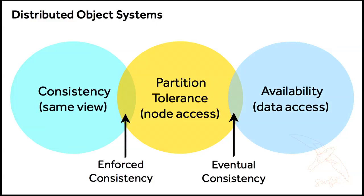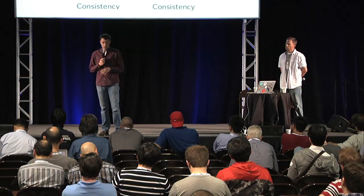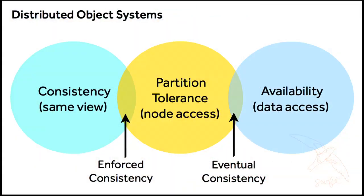Partition tolerance means you can withstand a timeout or network failure in your system — when two pieces of your distributed system can't talk to each other, they still work. Consistency means making sure all pieces of your distributed system have the same view of the world. Availability means it's always going to respond to requests. You have to choose partition tolerance, so this puts you into two buckets. You can have something that is eventually consistent — even with a hardware failure the system can still respond — which is what we see a lot with object storage.